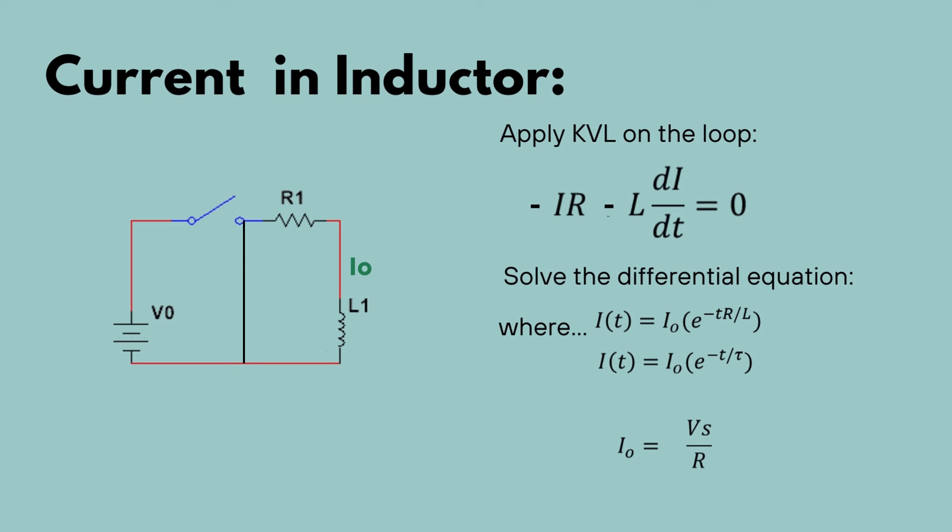Through solving this differential equation, we get the following equation. The current of a discharging inductor is equal to I₀, which is the fully charged current value for the inductor, multiplied by e^(−t/τ), where τ is L/R. I₀ can be calculated by taking the supply voltage, which has now been removed from the circuit, over the resistance.